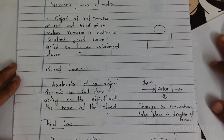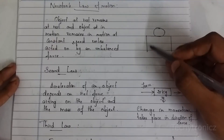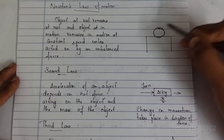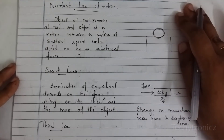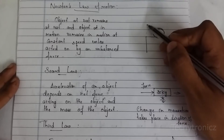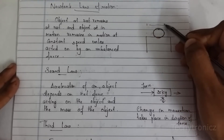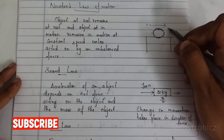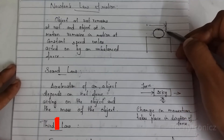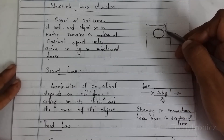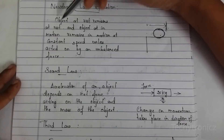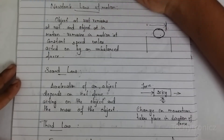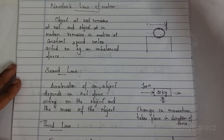The meaning of this is: for example, one ball is at rest — if we apply a force it will move. And if it is rolling at constant speed and we apply a force, it will stop. This is the first law: object at rest remains at rest and object in motion remains in motion at constant speed unless acted on by an unbalanced force.